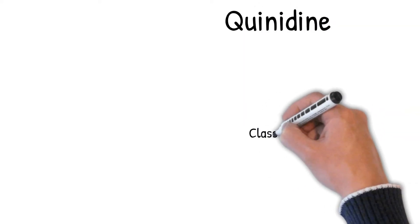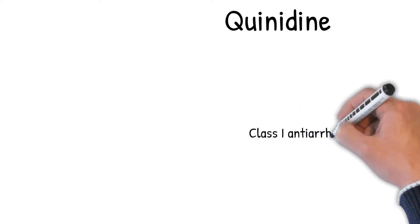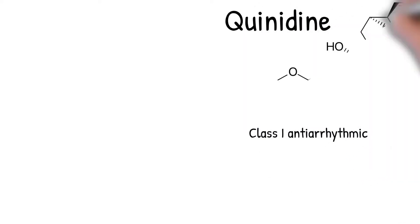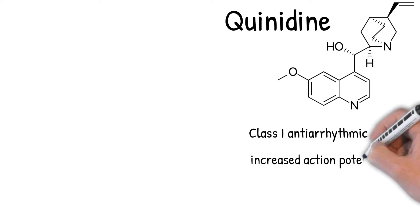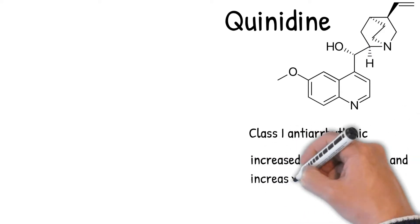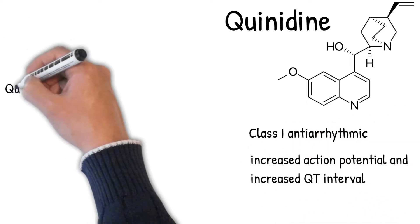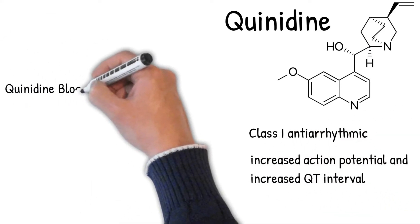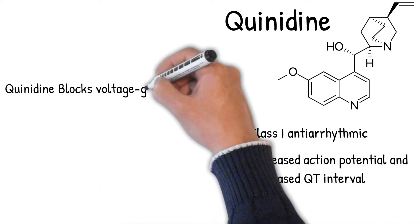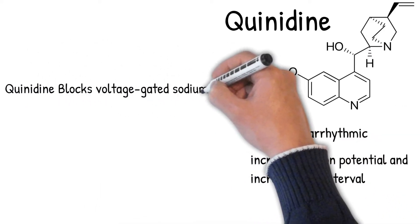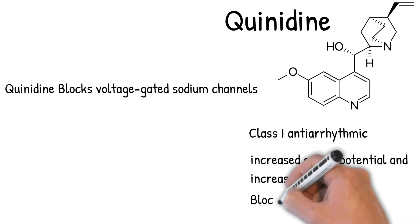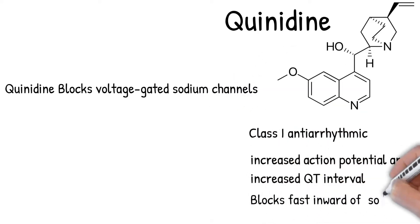Quinidine is a class 1 antiarrhythmic agent drug. Quinidine causes increased action potential and increased QT interval. It is called a class 1 antiarrhythmic drug because it acts on sodium channels.